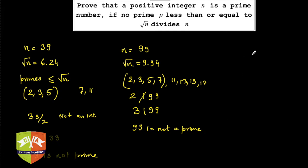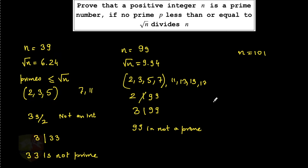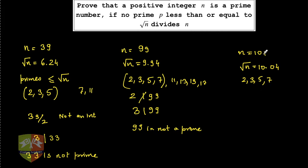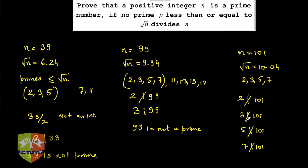Let's check another case: is n equal to 101 a prime? Root of 101 is 10.04. The prime factors less than 10.04 are 2, 3, 5, and 7. Clearly 2 is not a factor of 101 because it's odd. 3 is not a factor because the digits don't add up to a multiple of 3. Similarly, 5 doesn't divide 101 since there's no 0 or 5 at the units place, and 101 is also not divisible by 7.